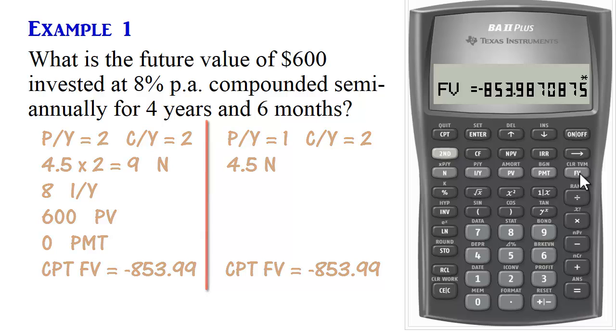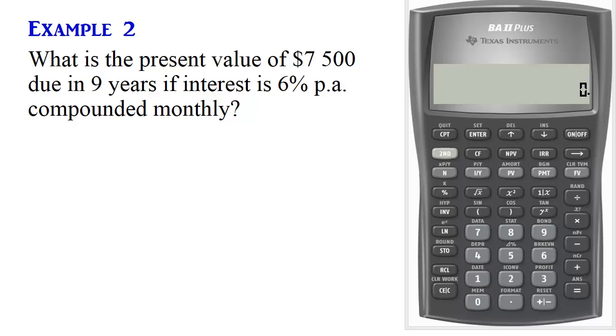Let's look at another example. Example 2. What is the present value of $7,500 due in 9 years if interest is 6% per annum, compounded monthly?